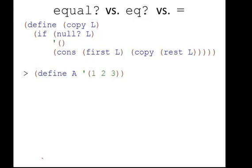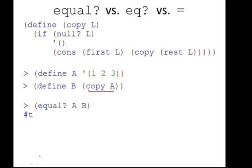Here's a function called copy. Take a second and read that. What I'm showing here is the difference between equal, EQ, and the equal sign. So let's pretend I have this list A, and then I make a copy of that, calling this copy function. Now I can check if these two things are equal, which returns true. This is checking logical equivalents. I can check if they're EQ,